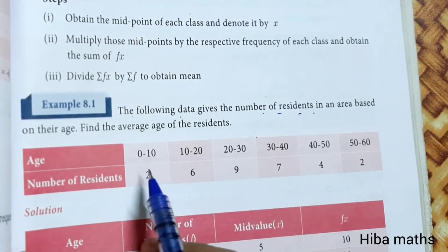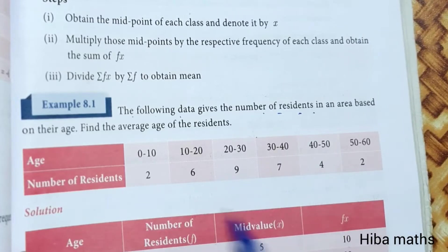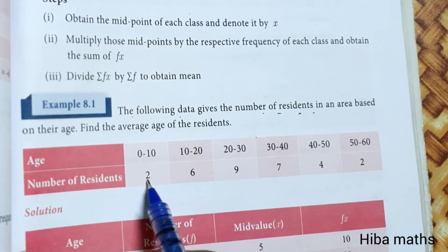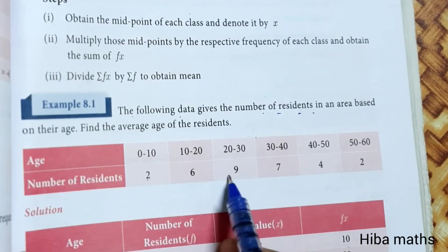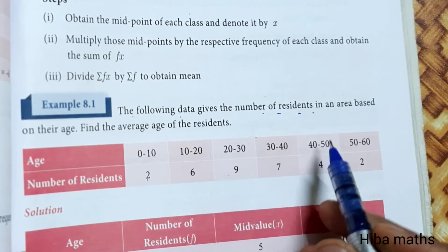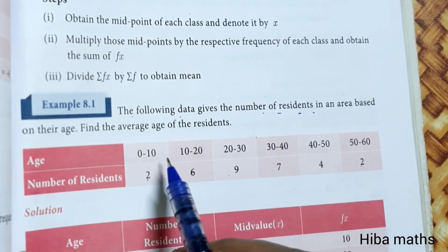You can see the number of residents in an area by age: 0 to 10, 10 to 20, 20 to 30, 30 to 40, 40 to 50, and 50 to 60. The frequencies are: 0 to 10 is 2, 10 to 20 is 6, 20 to 30 is 9, 30 to 40 is 7, 40 to 50 is 4, and 50 to 60 is 2.